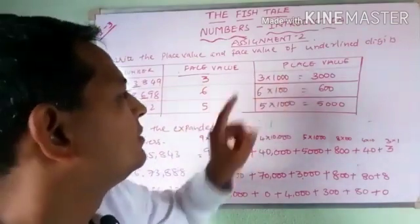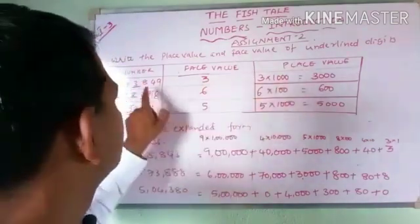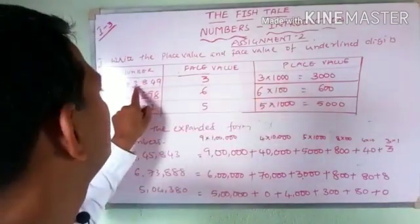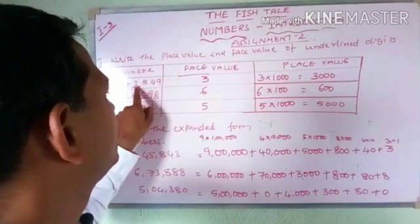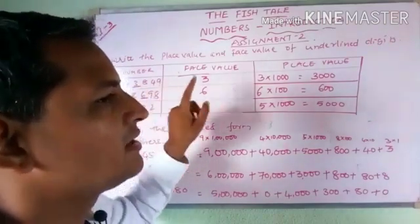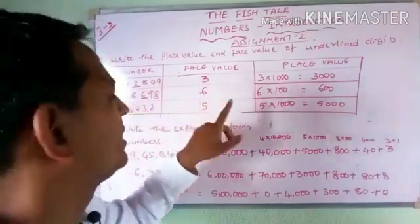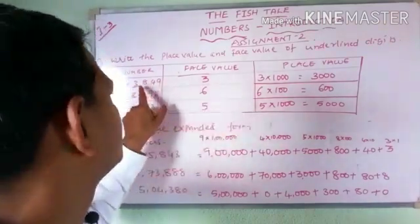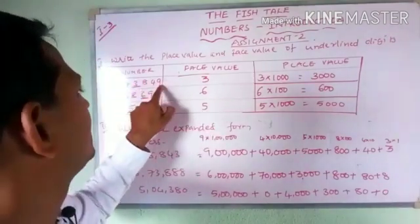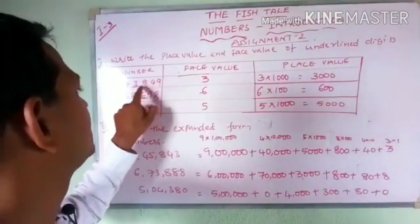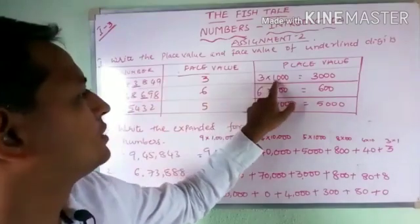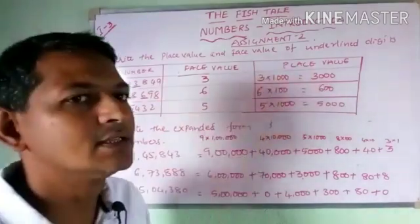For the place value, as we have discussed already, the face value should be multiplied with the place in which that particular digit is present in the number. Here, 3 is in the 1s, 10s, 100s, and 1000s place, so 3 into 1000 is 3000.